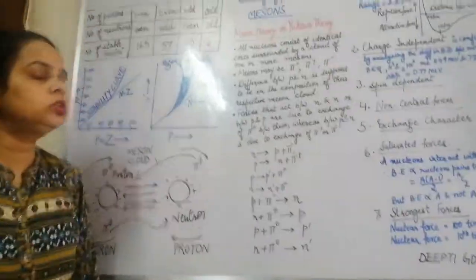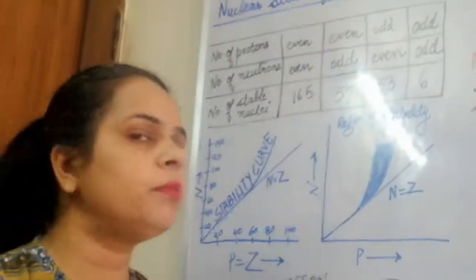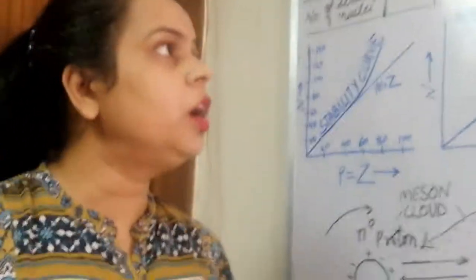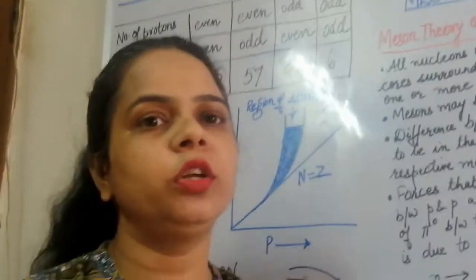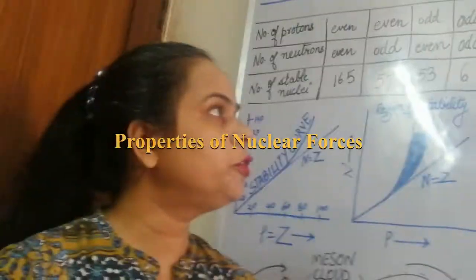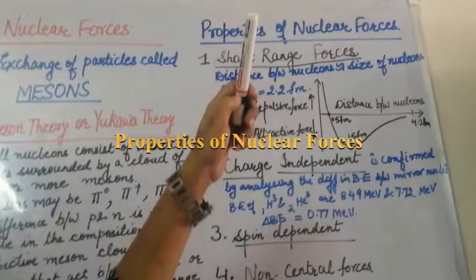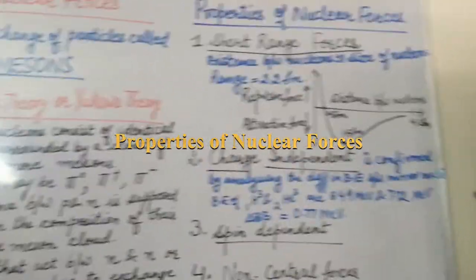This was the Yukawa theory given by Yukawa, the Japanese scientist. Now let's study the various properties of nuclear forces. The first property is that the Yukawa forces or nuclear forces are short-range forces. They are short range because the nucleons exist inside the nucleus and these forces must be applied within the nuclear range.